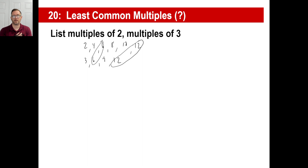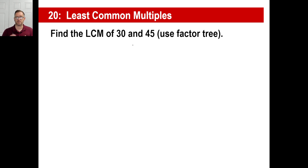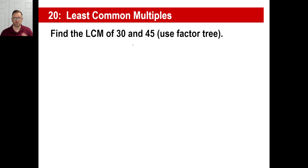Sometimes we want to find the least common multiple, which is helpful in fractions and in algebra. So instead of having to write all the multiples out and finally find one that's common among two or three numbers, we can use this technique — it's fantastic. Watch how this happens and make sure you copy this down. They'll say: find the LCM of 30 and 45. Go ahead and pause and do factor trees of 30 and 45, circle the prime numbers, then come back.